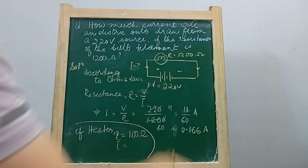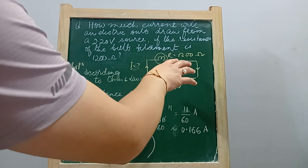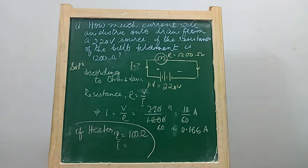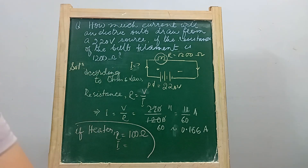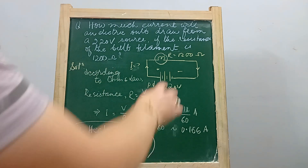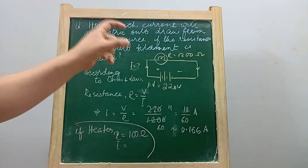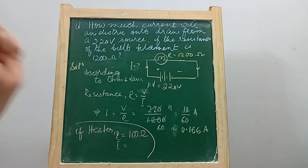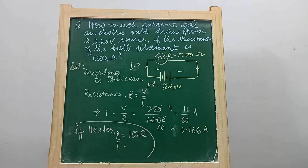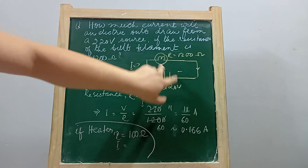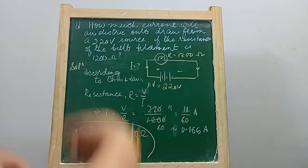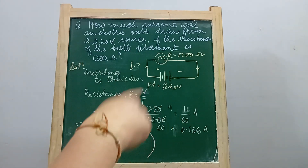Lesser resistance means more current will flow, and if resistance is more, less current will flow — that's the literal meaning of resistance. According to Ohm's Law, in an electrical circuit, for any conductor, if the temperature is kept constant, the ratio of the potential difference V across the conductor to the current I flowing through it is constant.